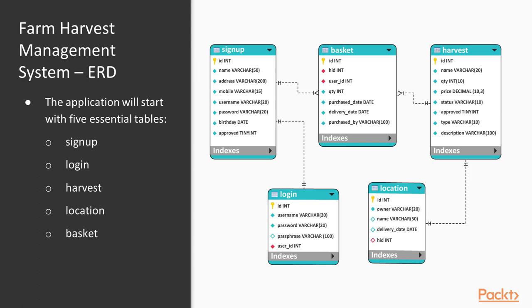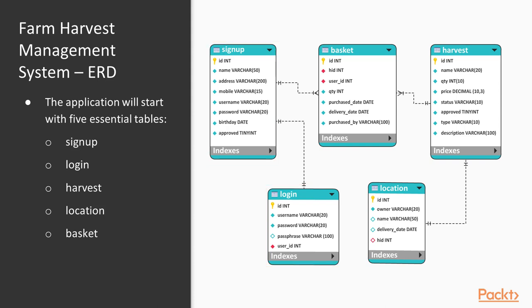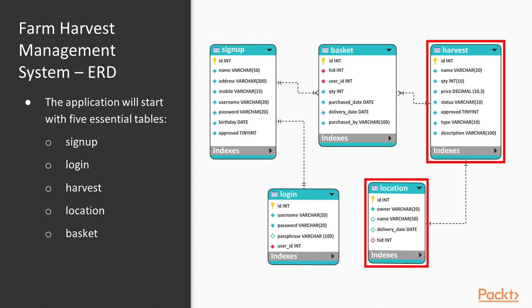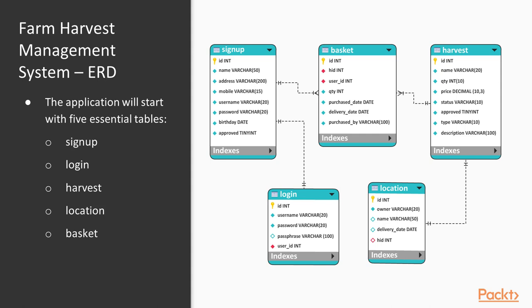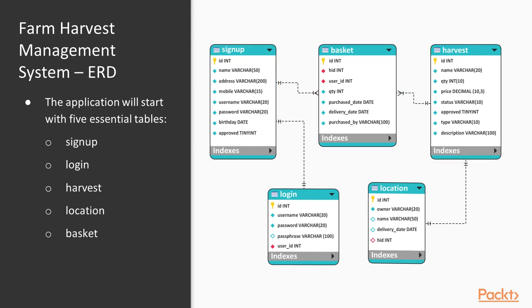As depicted in the ERD design here, each table has exactly one primary key. The Login Table has a one-to-one relationship with Sign Up, and the same applies to Location with Harvest. Moreover, Basket has a many-to-one relationship to Sign Up as well as to the Harvest Table.